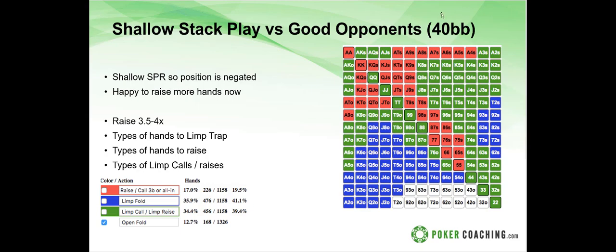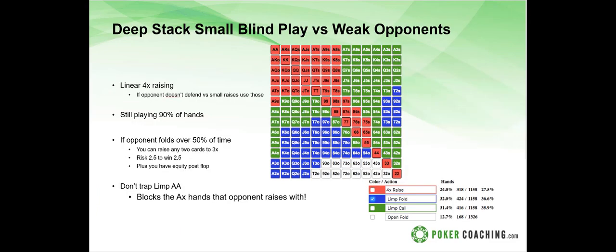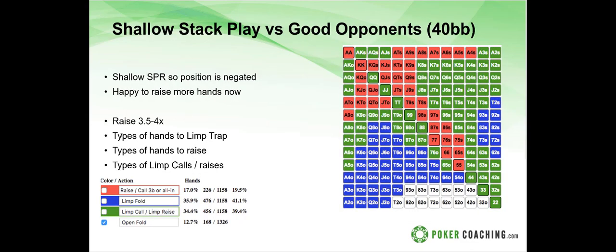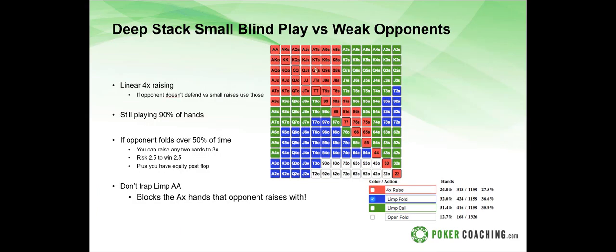If you're playing against an opponent who is not raising enough from the big blind, all the green hands become raises — no limp traps needed against very tight opponents, because we don't need to protect our range against them. At 40 big blinds against a weak opponent, the range becomes basically the same as the 100 big blind range against a weak opponent.